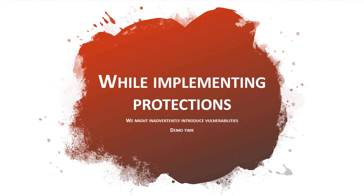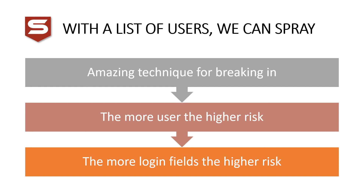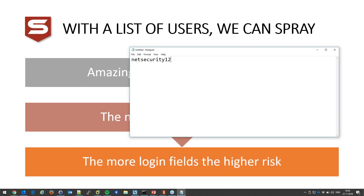This has tremendous value because with a list of legitimate usernames, we can now find users with potentially weak passwords — for example in Active Directory or a database where someone in customer support had their password reset to something like 'netsecurity18' or 'winter2018' — those kinds of weak passwords.